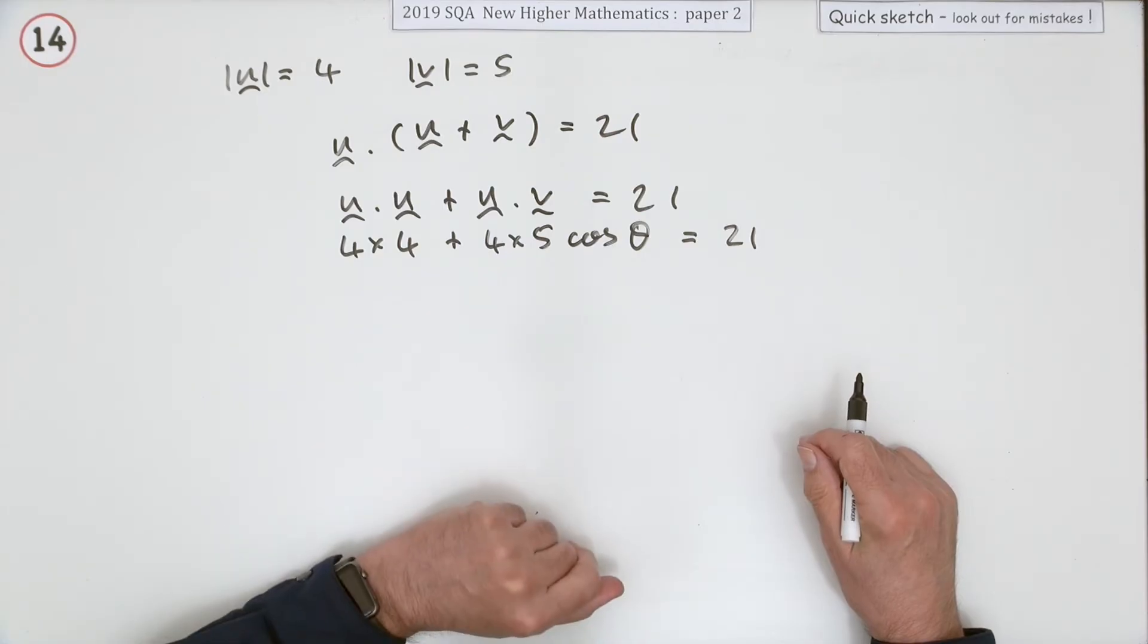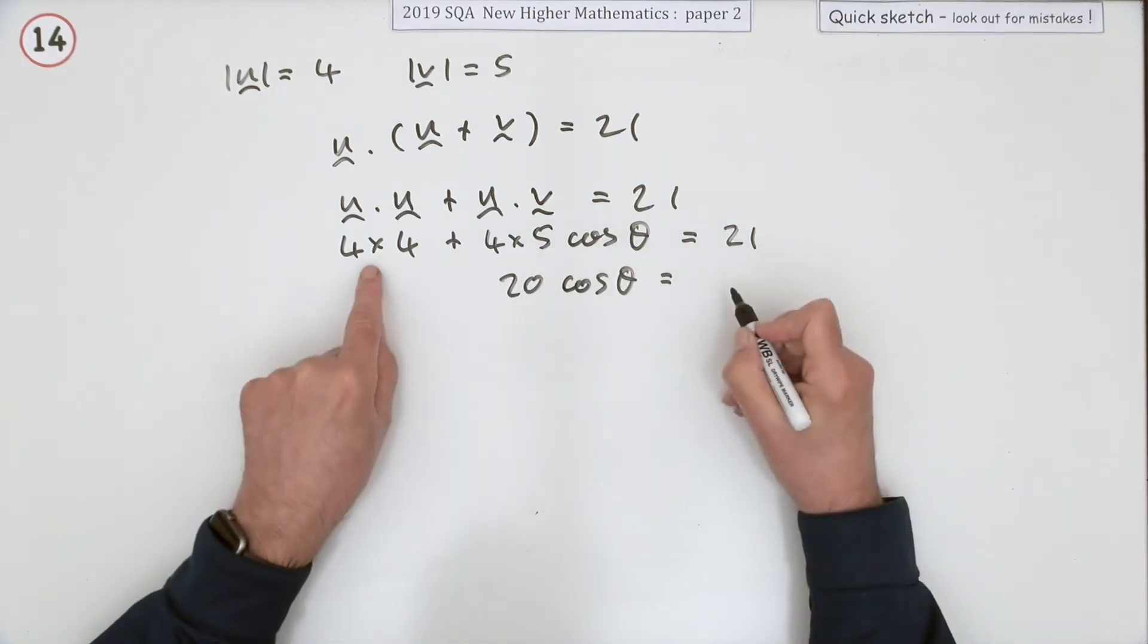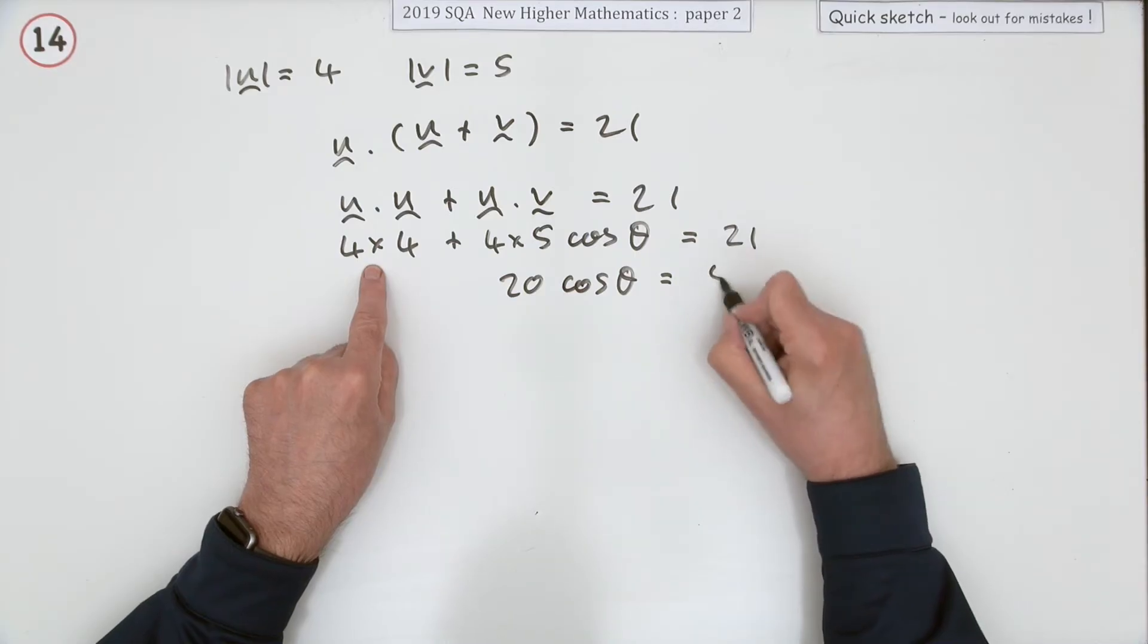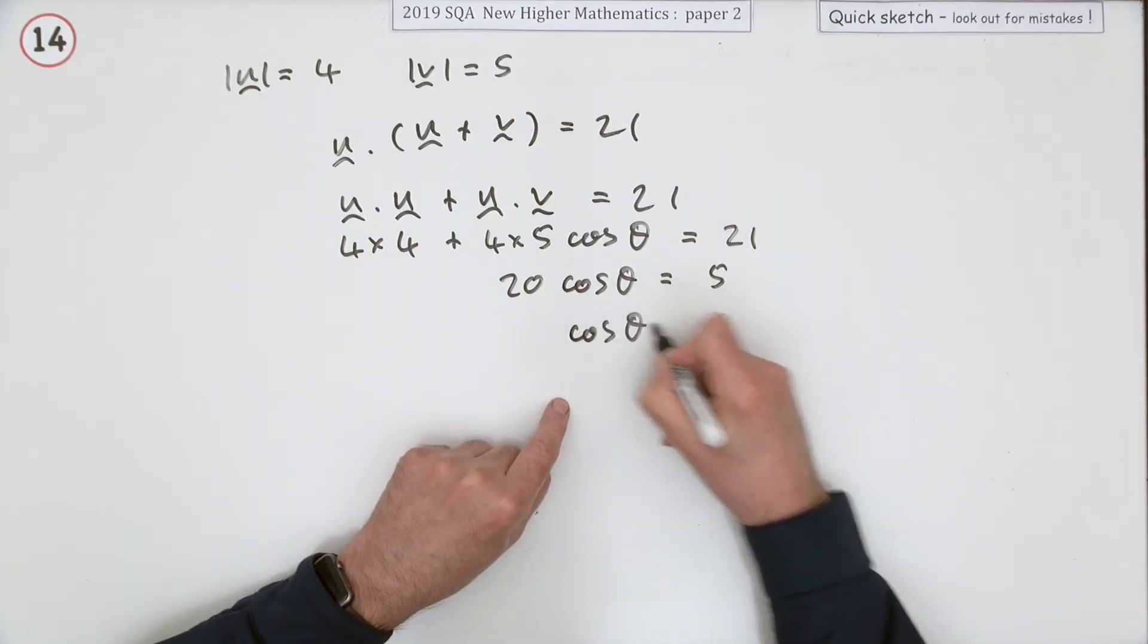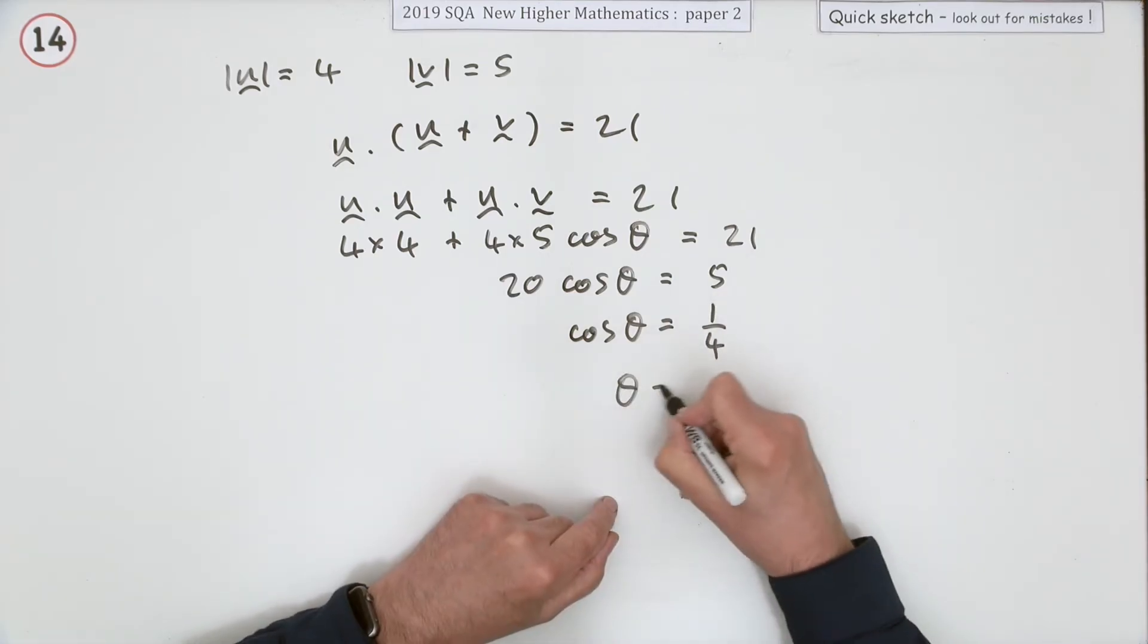It's just the case to find that. So 20 cos theta, taking 16 away leaves 5, so cos theta will be taking the 20 across and divide as a quarter.